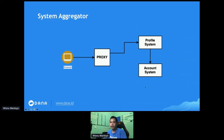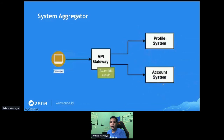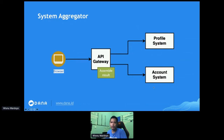Another downside is that if more APIs need the balance, they all need to connect with the account system, causing duplicate code everywhere. With the API Gateway acting as a system aggregator, instead of the profile system calling the account system, the API Gateway can call both services at the same time and aggregate the result into a single response.